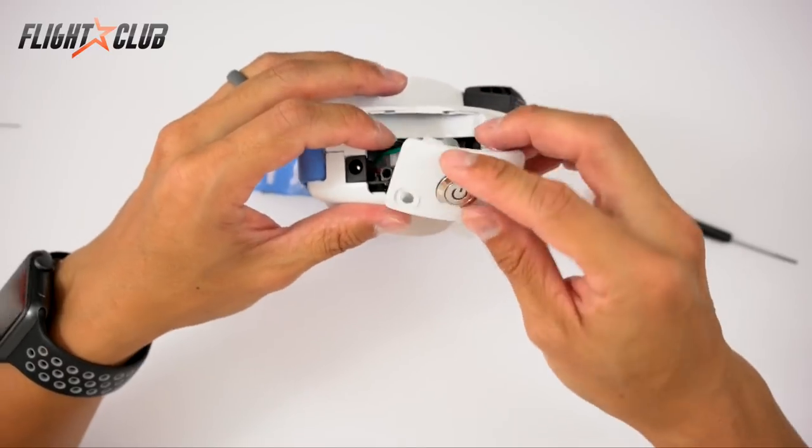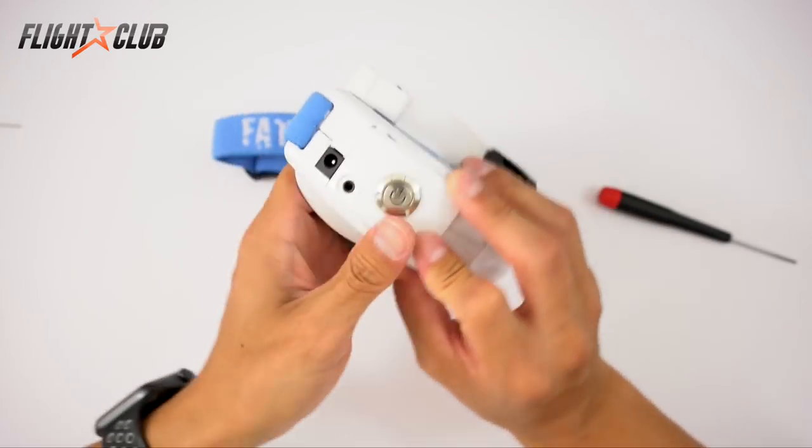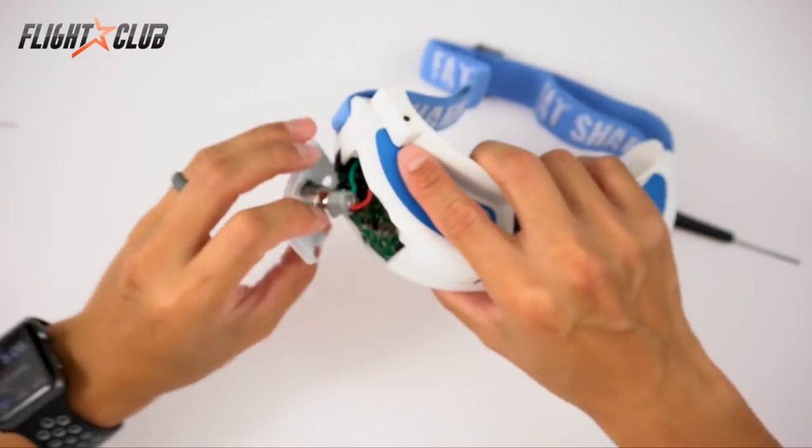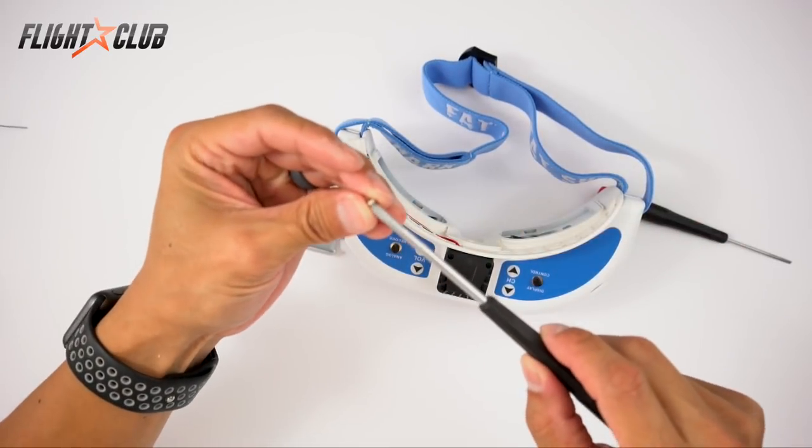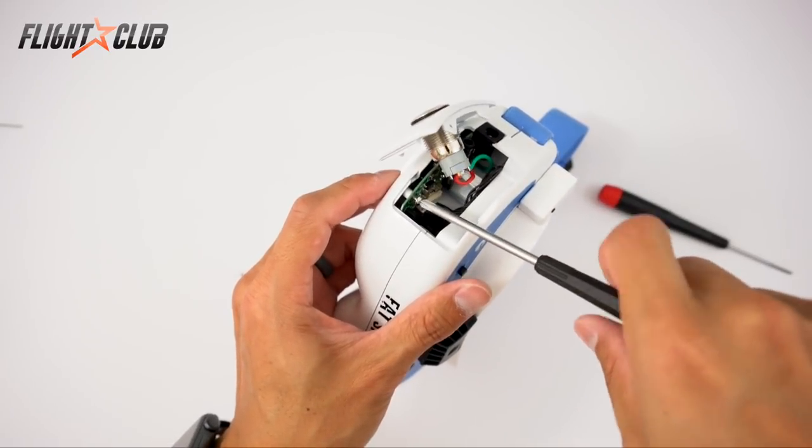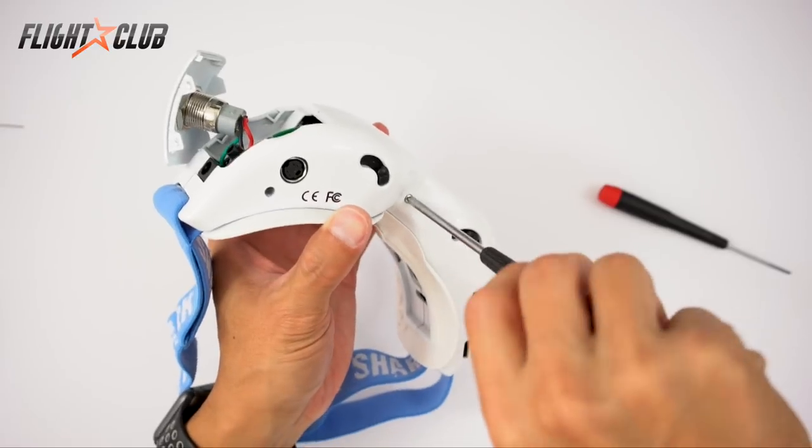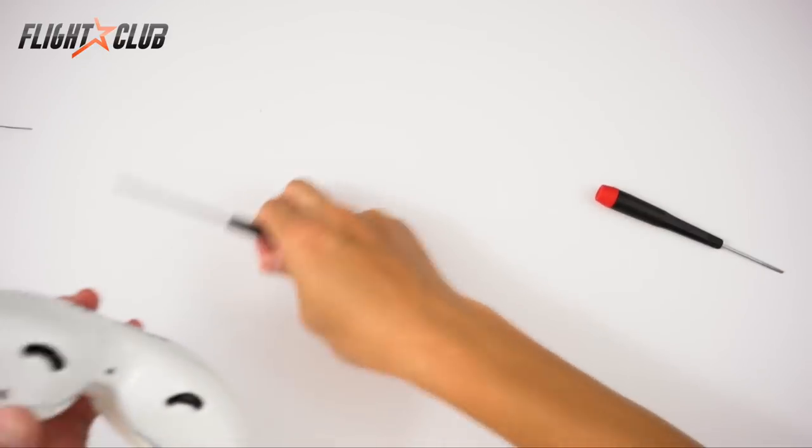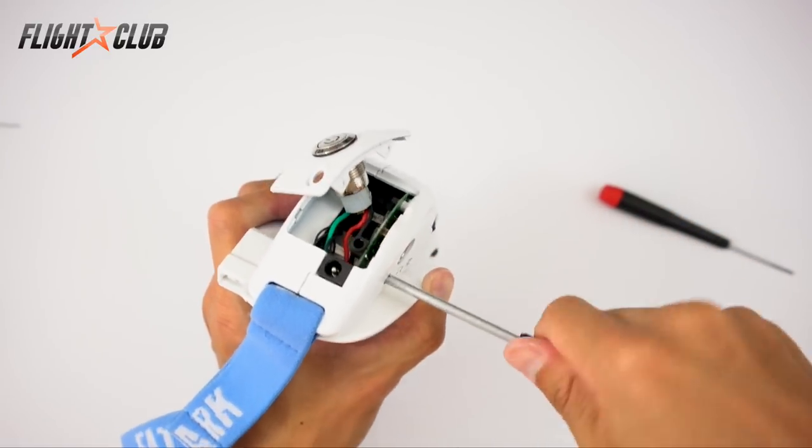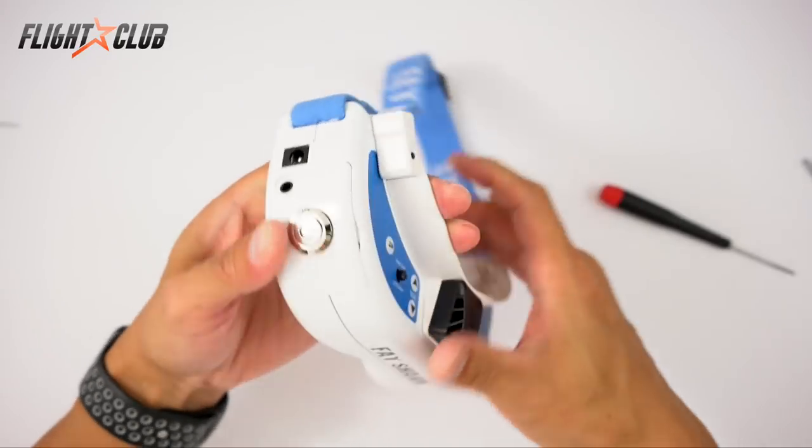And then if you use the circle marker on the back of this, the connector should fit perfectly in here. Once you got that, push it in. Whoops, I forgot to put in the screw. And then you're going to tighten this center screw back on. And then put the screw on the bottom.